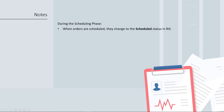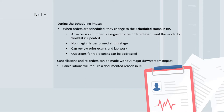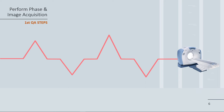A few notes to keep in mind. During the scheduling phase, when orders are scheduled, they change to the scheduled status in RIS. An accession number is assigned to the ordered exam, and the modality worklist is updated to reflect the change. No imaging is performed at this stage. You can review any prior exams or lab work for the patient, and any questions for radiologists can be addressed. Cancellations and reorders can be made without major downstream impact; however, any cancellations will require a documented reason in RIS.